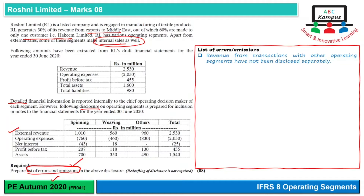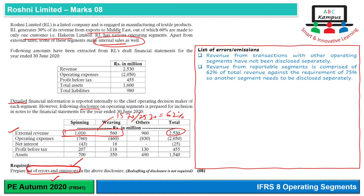Reportable segments ko agar hum dekhte hai, to external revenue 1010 aur 560 hai, yeh humara total ban jata hai 1570, aur jo total hai wo 2530. Iska percentage calculate karte hai to that is 62%, to 75% criteria meet nahi ho raha. IFRS ki requirement hai ki 75% of the external revenue reportable segments mein honi chahiye. Agar na ho, to mazeed segments ko reportable banana chahiye. So revenue from reportable segments comprised of only 62% of total revenue against the requirement of 75%, so another segment needs to be disclosed separately — others mein na dalen, aur kuch aur segments ko bhi reportable banayen jab tak 75% of external revenue complete nahi ho jata.